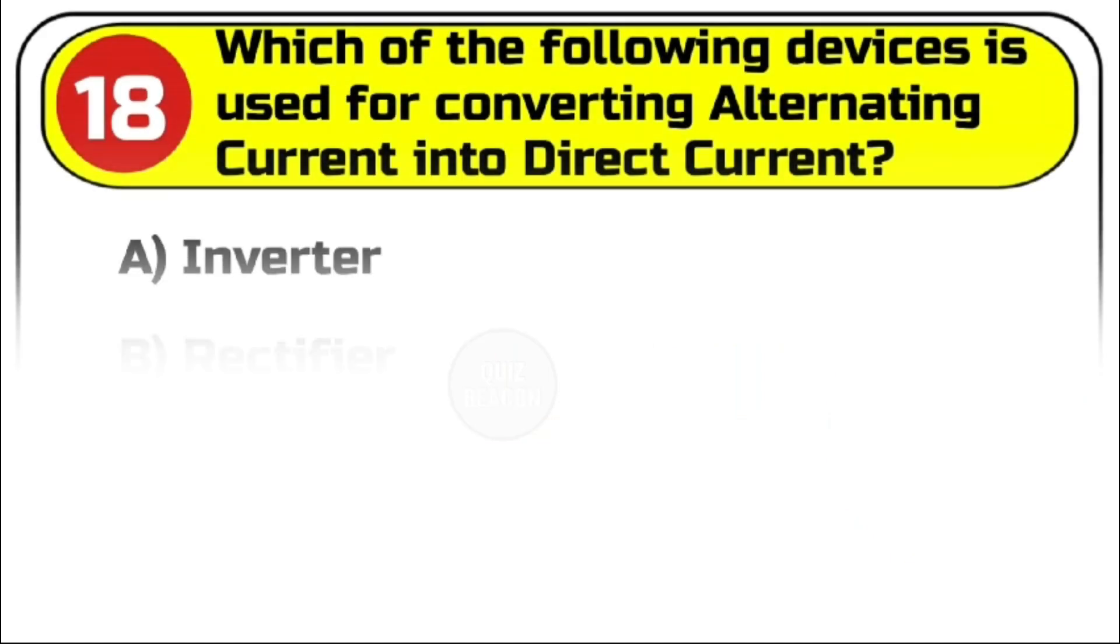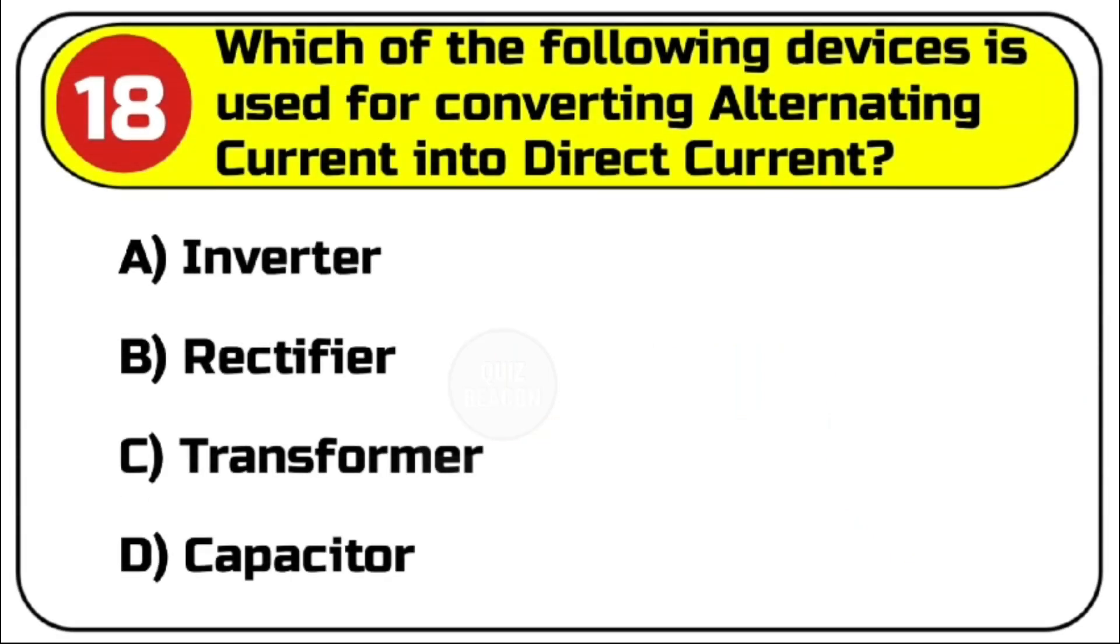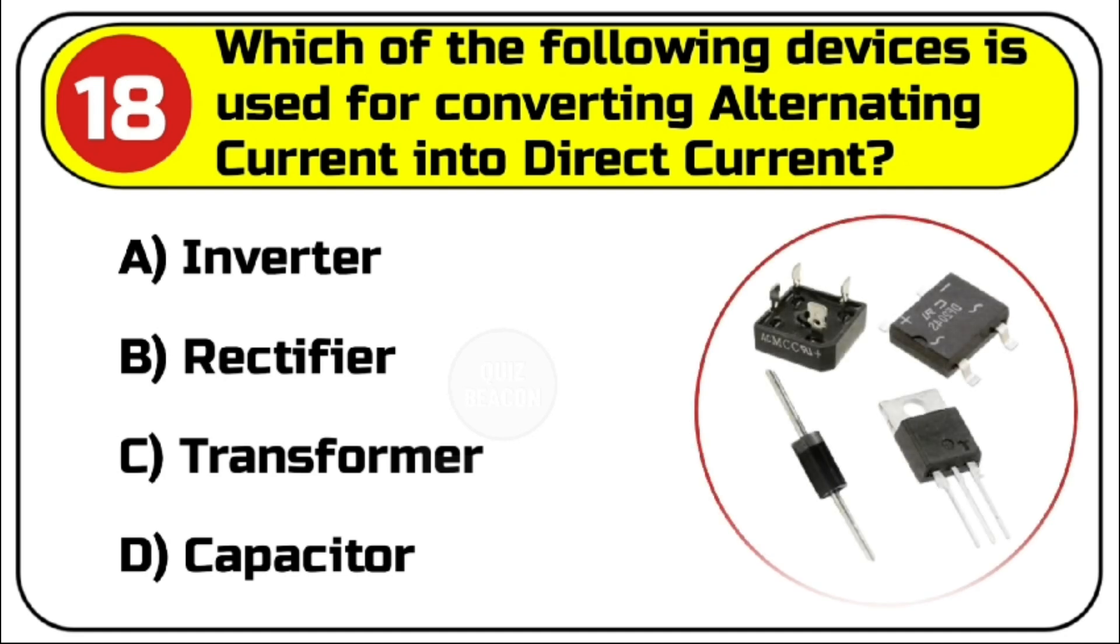Question number 18. Which of the following devices is used for converting alternating current into direct current? Options are A. Inverter. B. Rectifier. C. Transformer. D. Capacitor.